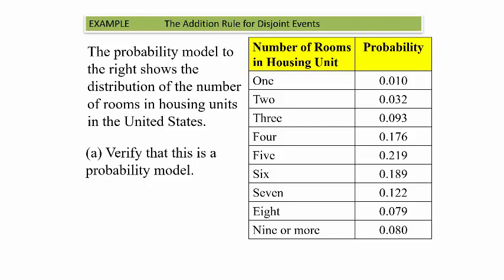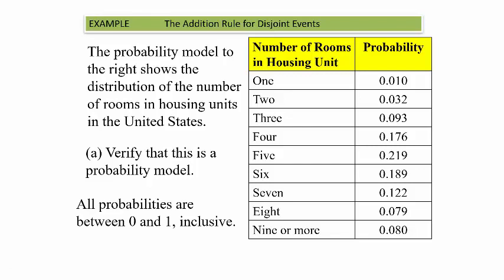Here's a table listing the number of rooms in housing units and their corresponding probabilities. For example, the probability a housing unit has only one room is 0.01, or 1%. The highest probability is a housing unit with five rooms at 0.219, or 21.9%. To verify this is a probability model, we check that all probabilities are between 0 and 1 inclusive — which they are — and that they sum to 1 — which they do.